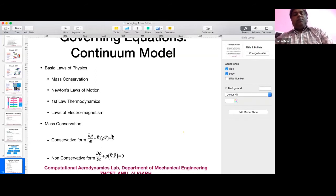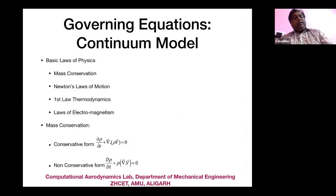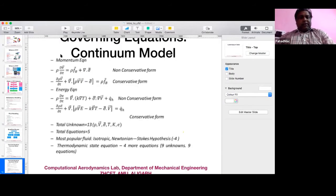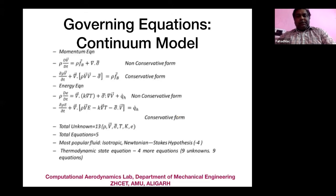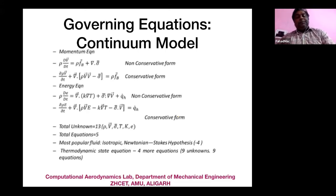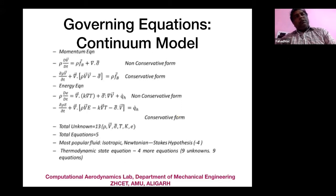In fluid flow simulations, the conservative form of equations is preferred and nearly all commercial CFD codes use this approach. The conservative form is especially important for compressible flows where there are large jumps and discontinuities — such as shock waves — occurring over very small regions of space and time. If you want to model those large discontinuities in a small space-time region accurately, the conservative form is essential.